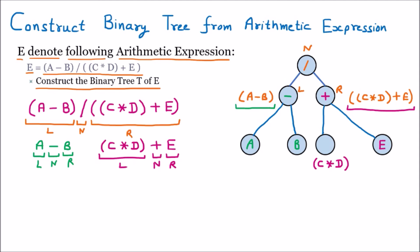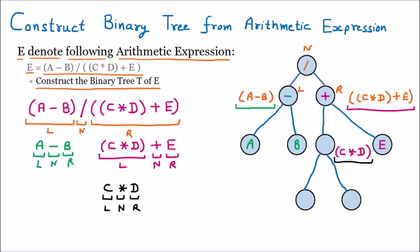Now we solve the remaining left portion C into D. The binary tree has the property of three things: left, node, and right. Dividing C into D into three parts, the arithmetic expression is infix so the middle is the parent. Therefore star is the parent, C is the left child, and D is the right child. Two nodes are constructed with star as parent, C on the left, and D on the right.